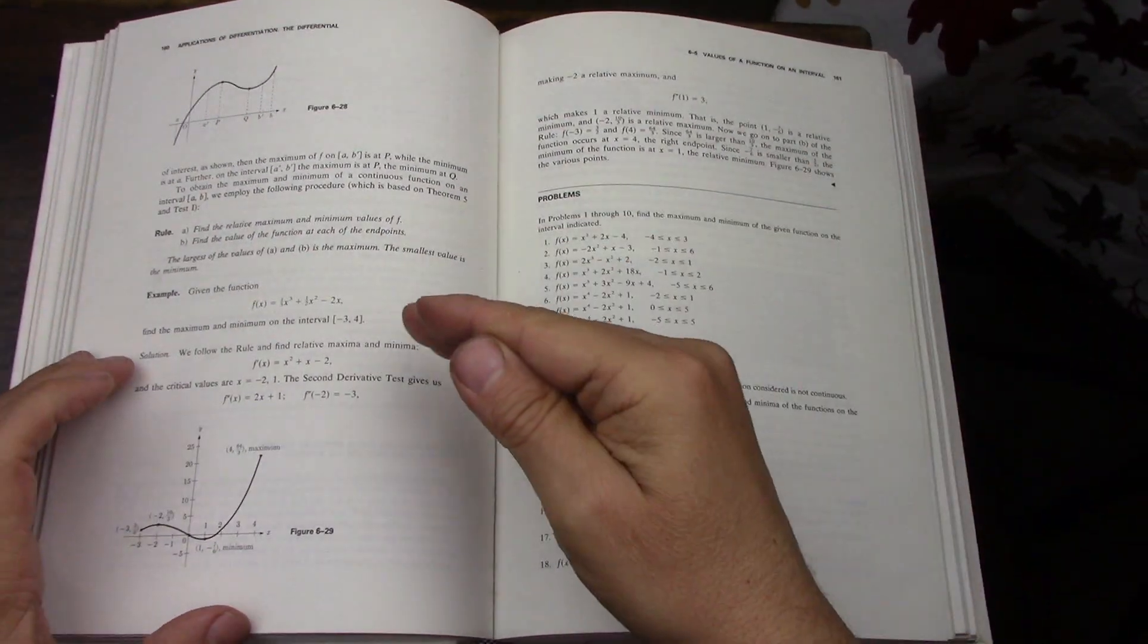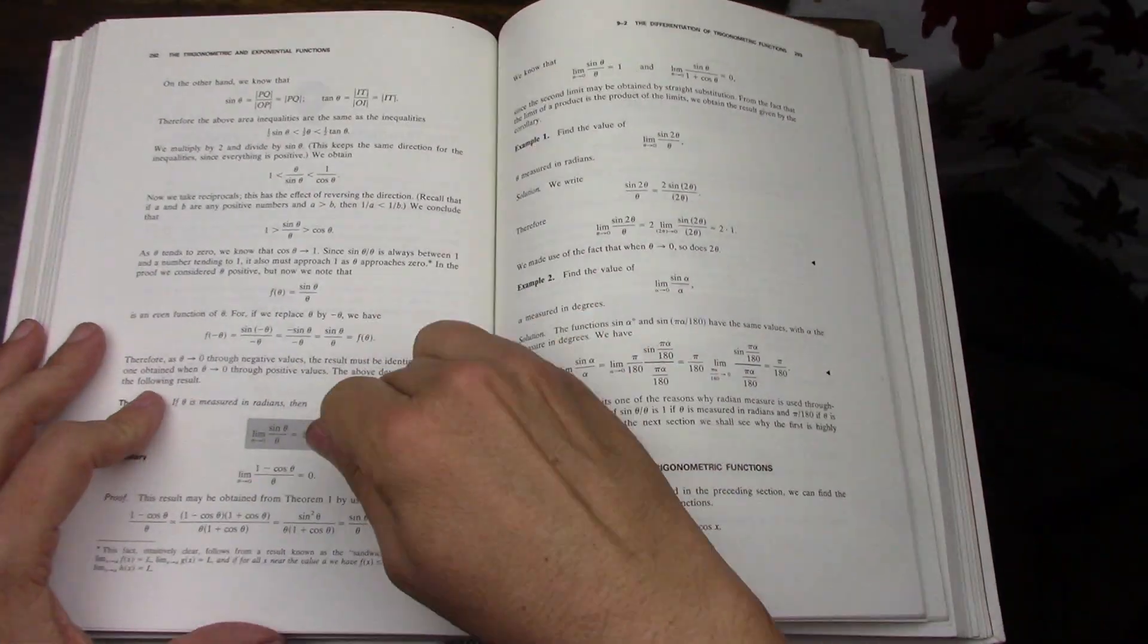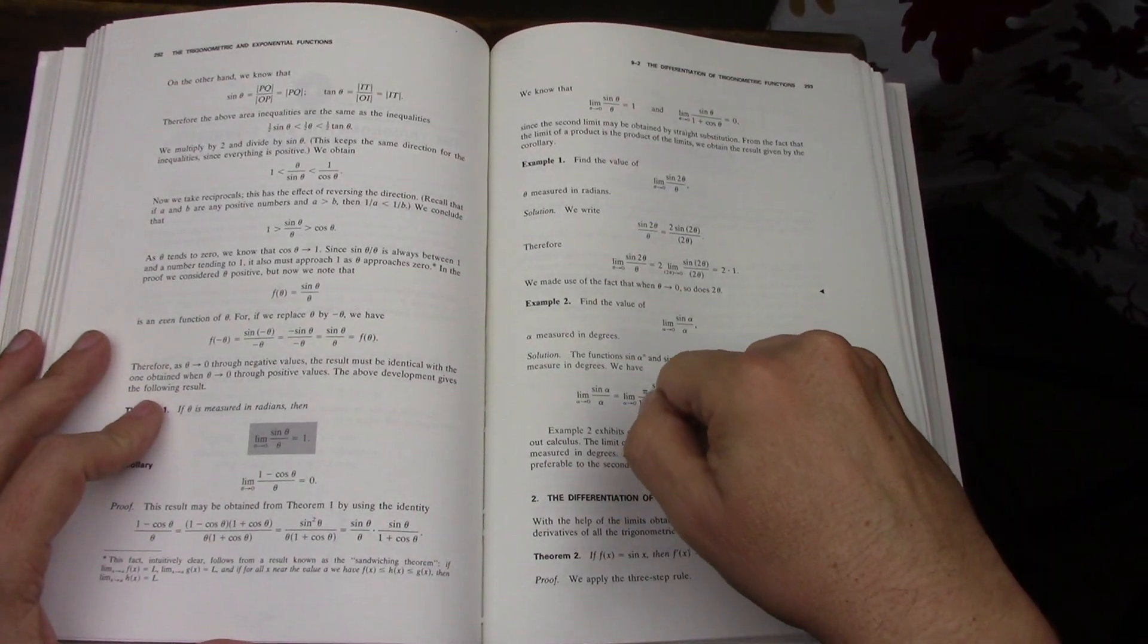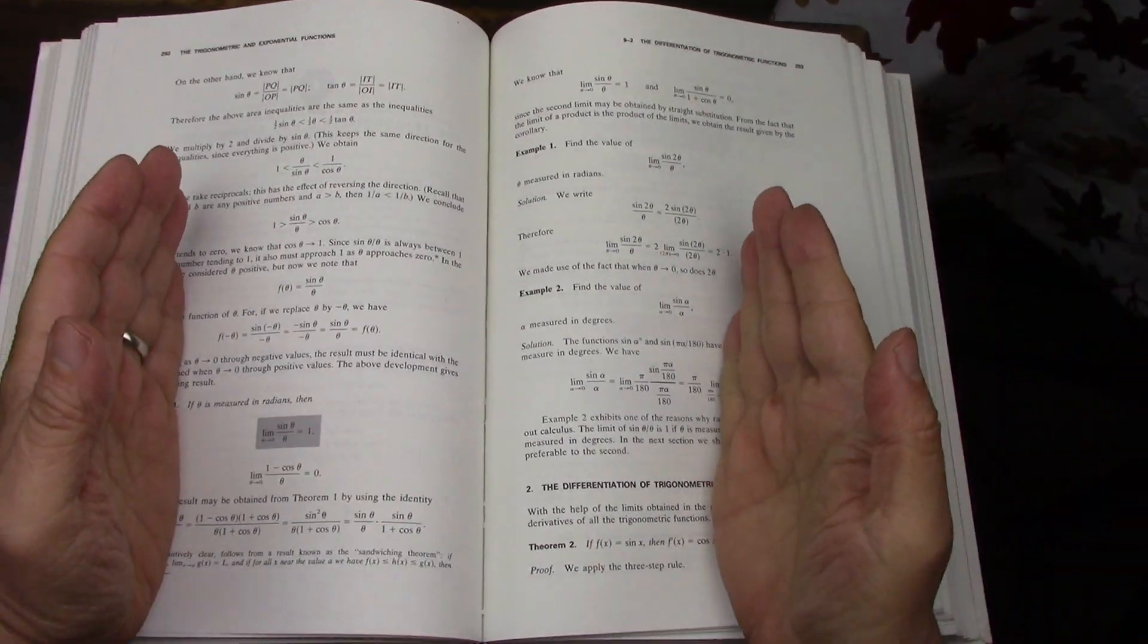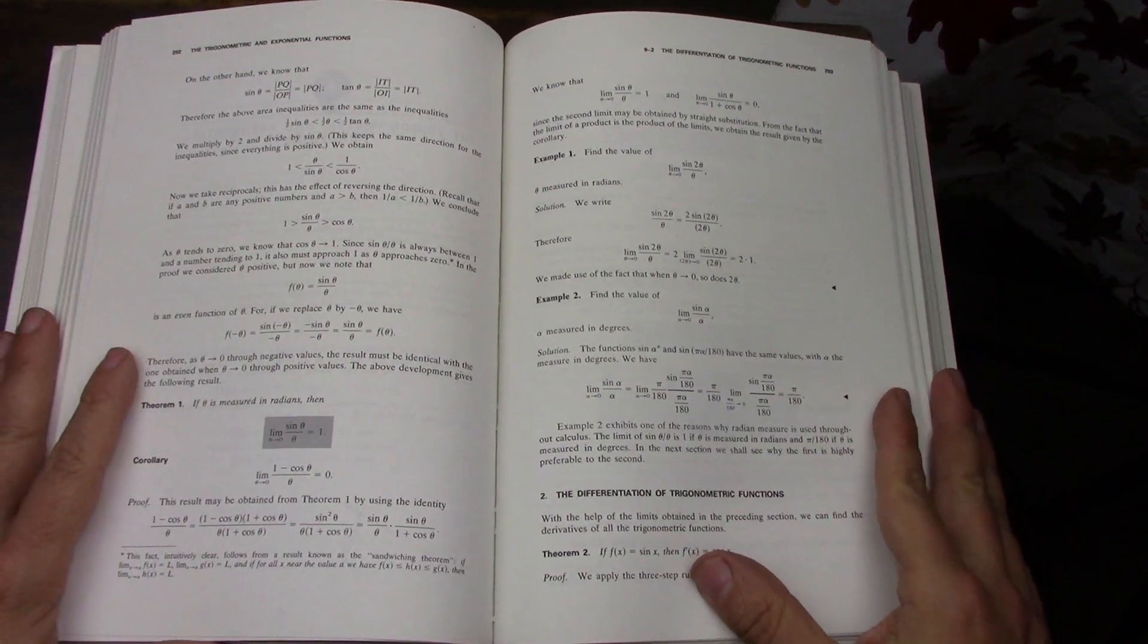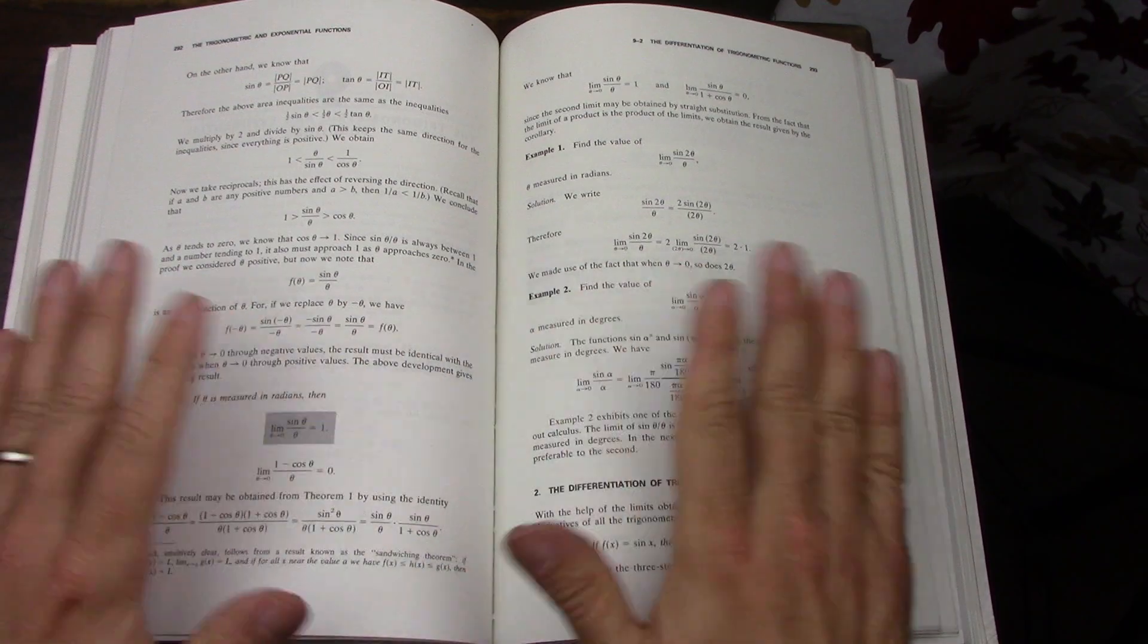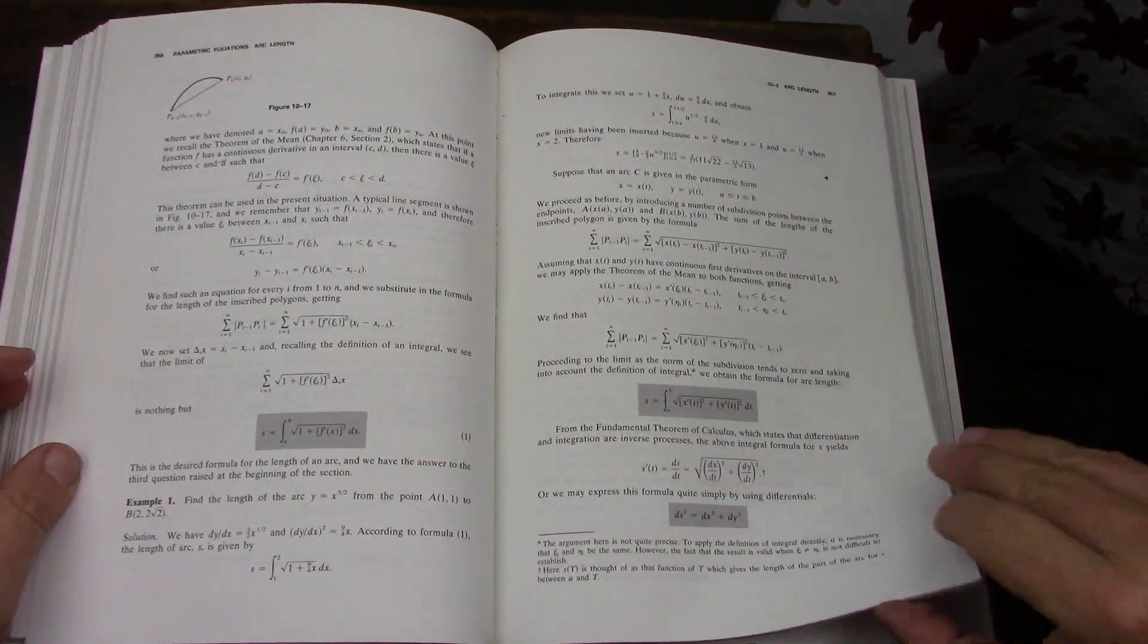It's kind of sad because now looking back, it's not like Rudin where you have baby Rudin, papa Rudin, grandpa Rudin, and there are three books, a clear trilogy. It's almost like reading Lord of the Rings. But in this case, I'm done. I'm not getting any more Protter and Morrey books. But yeah, good stuff.